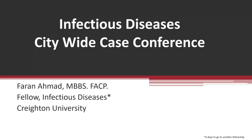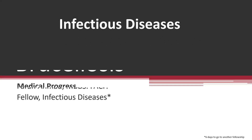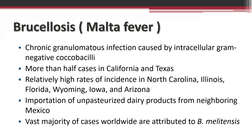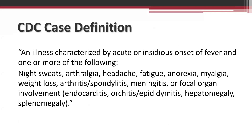Let's start with our next presentation. Brucellosis is a chronic granulomatous inflammation caused by intracellular gram-negative coccobacilli. In the US, more than half of cases are in either California or Texas, however other states including North Carolina, Idaho, Florida, Iowa, and Arizona can have incidents as well. Basically, it involves importation of unpasteurized dairy products from neighboring countries like Mexico, and the vast majority of cases worldwide are attributed to Brucella melitensis.